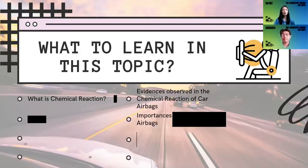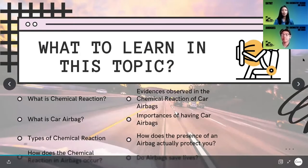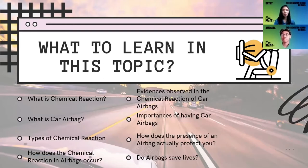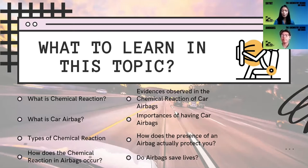Let's now go to what to learn in this topic. First is, what is chemical reaction? What is car airbag? The types of chemical reaction, how does the chemical reaction in airbags occur? Evidence observed in the chemical reaction of car airbags, the importance of having car airbags, how does the presence of an airbag actually protect you? And also, do airbags really save lives? We are going to answer that in a few minutes.